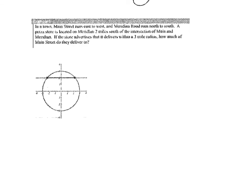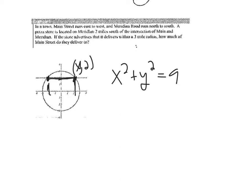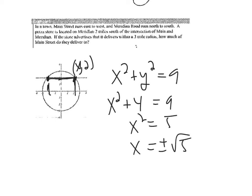Now I'm looking at a circle centered at the origin, so the equation is x² + y² = 9 (radius 3). I'm looking for the x-coordinates of two points on a horizontal line at y = 2. Substituting y = 2: x² + 4 = 9, so x² = 5, and x = ±√5. The distance between those two points is 2√5.